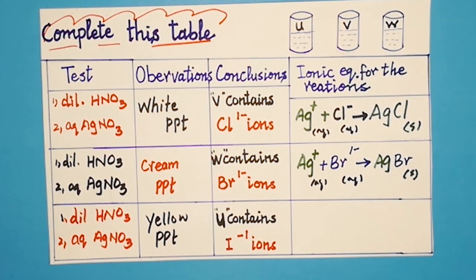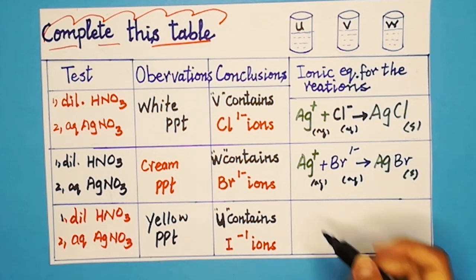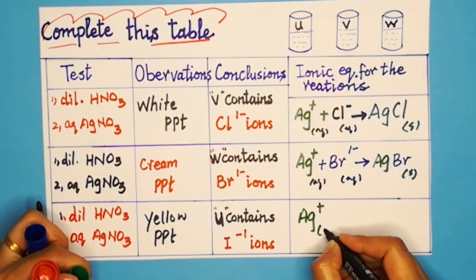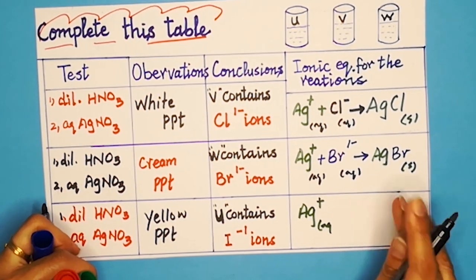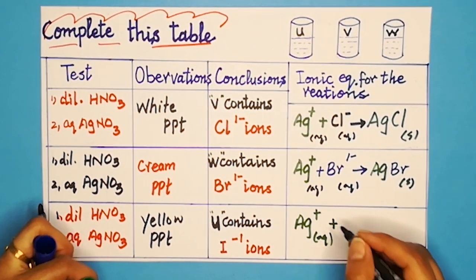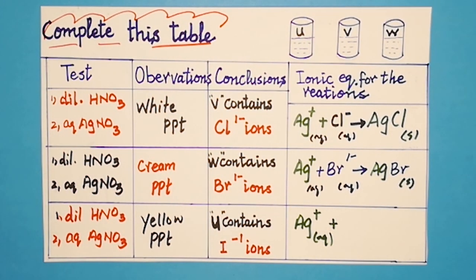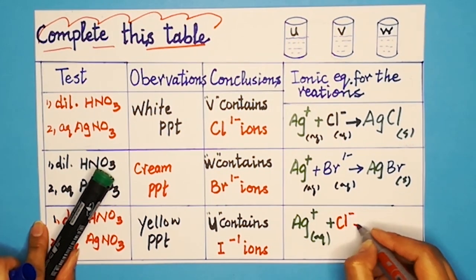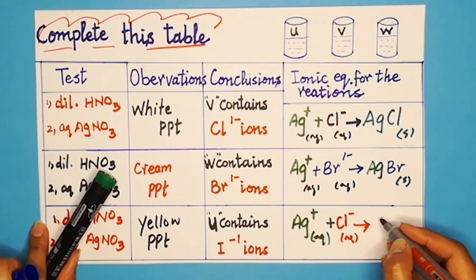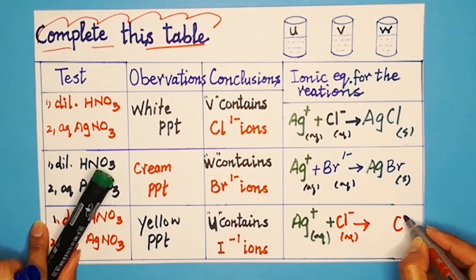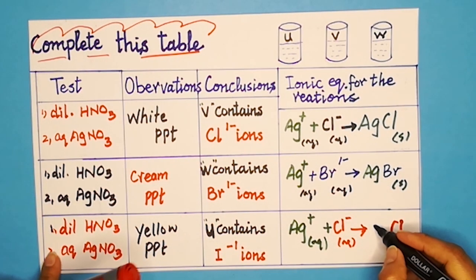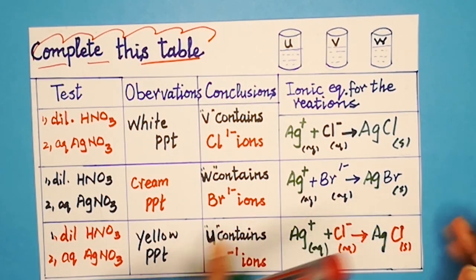For iodide ions, the ionic equation is: silver ions (aq) plus iodide ions (aq) form silver iodide (s) — a yellow precipitate. The ions are in aqueous state and the product is a solid precipitate.